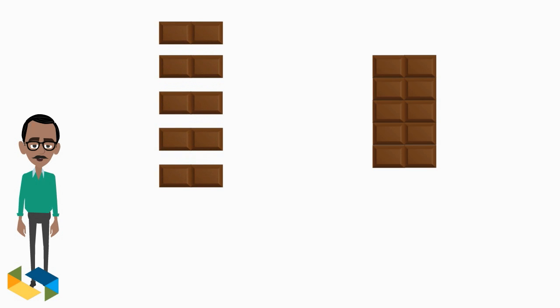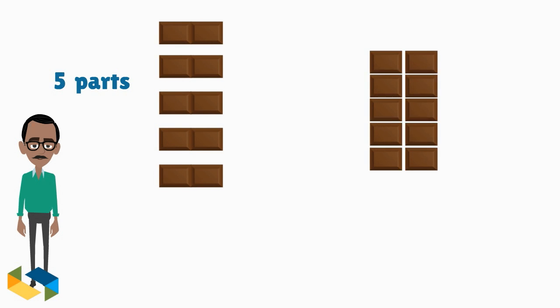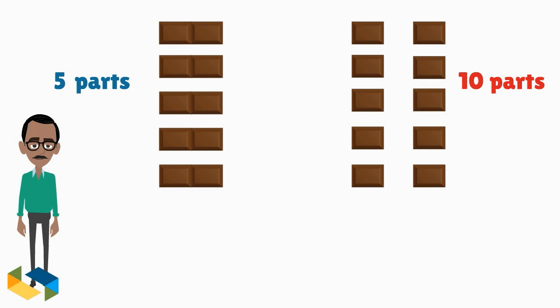Divide this bar into 5 parts and make 10 parts of the chocolate bar here. As a result, the denominators are 5 and 10 respectively.